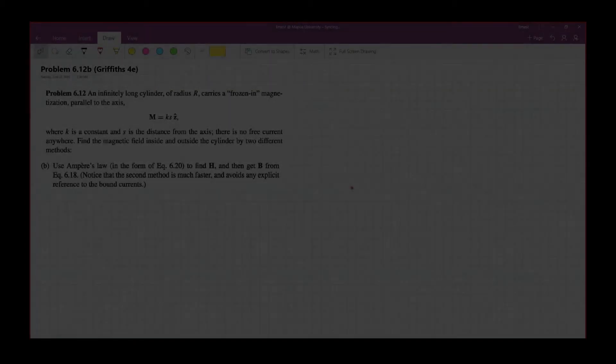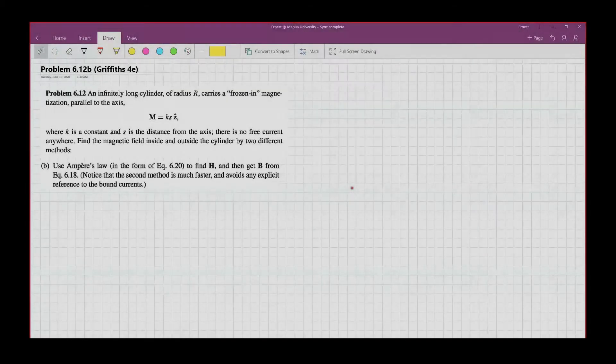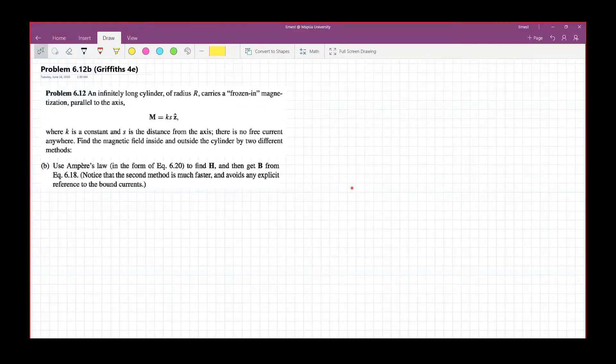Problem 6.12 reads: an infinitely long cylinder of radius R carries a frozen-in magnetization parallel to the axis, given by this equation.